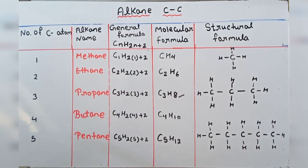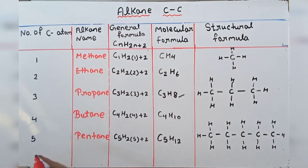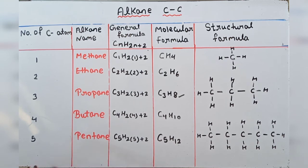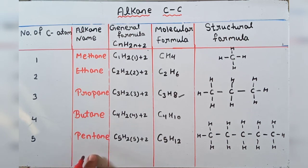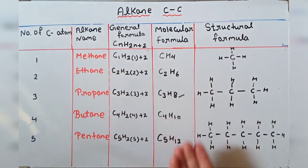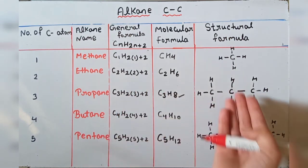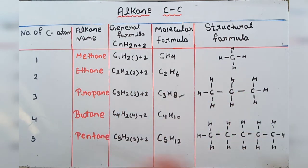Aisi hi tarah number of carbon 6 ke liye draw karte ho — 6 ke liye alkane kya rahega: hexane. 7 ke liye rahega heptane, 8 ke liye octane, 9 ke liye nonane, 10 ke liye rahega decane. Aise hi aap baaki sab number of carbon ke liye bhi draw kar sakte ho, molecular formula nikaal sakte ho, general formula aur structural formula bana sakte ho.